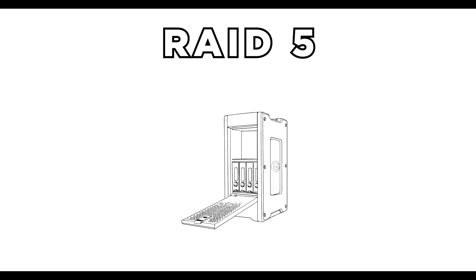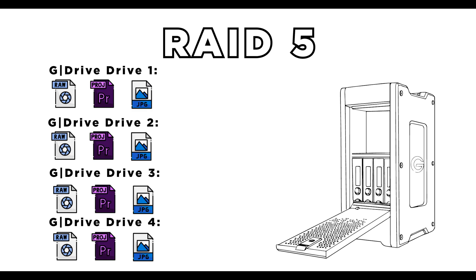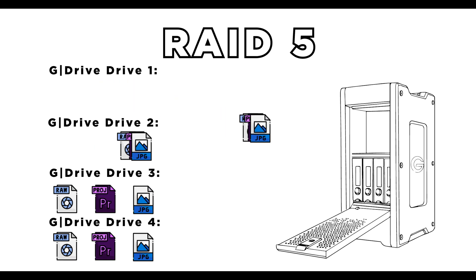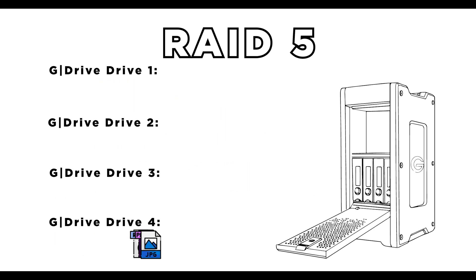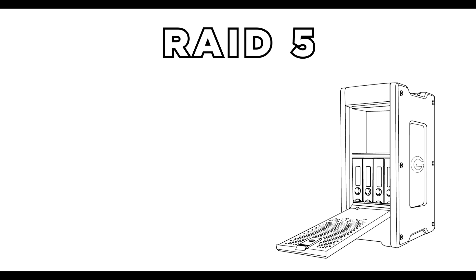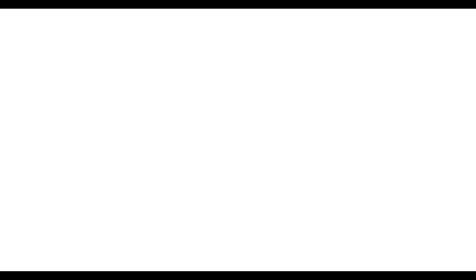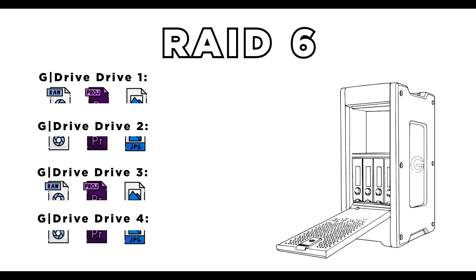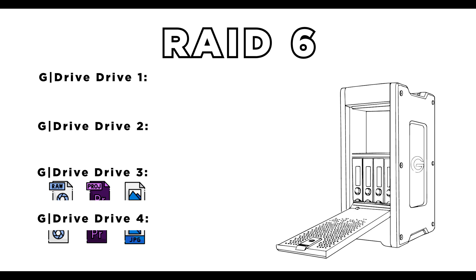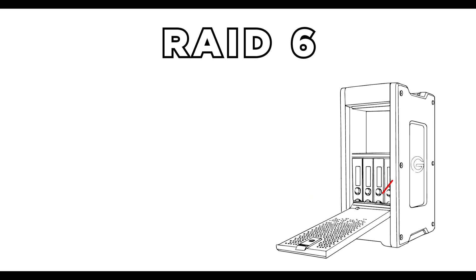RAID 5, or Single Drive Redundancy. This would go well with a drive like the G-Technology G-Speed Shuttle where there are at least four disks. If one fails, then three of the four disks will be fine. RAID 6, or Two Drive Redundancy. This particular setup requires at least four disks. In this scenario, up to two drives can fail, leaving the remaining drives safe.